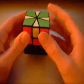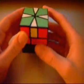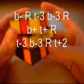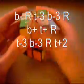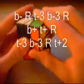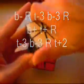And this one, to fix this so you get your one side back, that one is B minus, R, T minus 3, B minus 3, R, B plus, T plus, R, T minus 3, B minus 3, R, T plus 2. And now you've got your one side solved again.